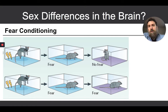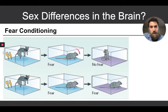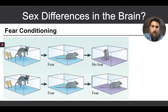A rodent is picked up out of its cage and put into a blue box, and it is given a foot shock. It associates the foot shock with the blue box. When you put the rat back into the blue box in subsequent trials and don't give it a foot shock, it will exhibit a fear response, because it's associated this novel blue environment with the foot shock.